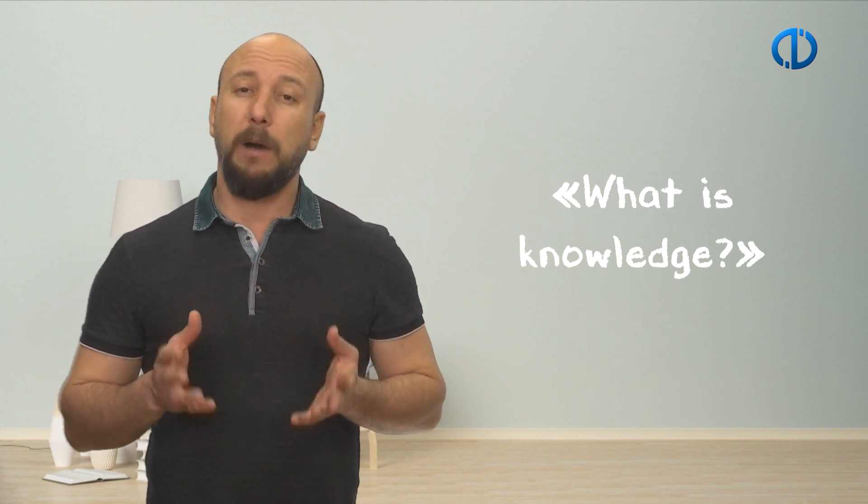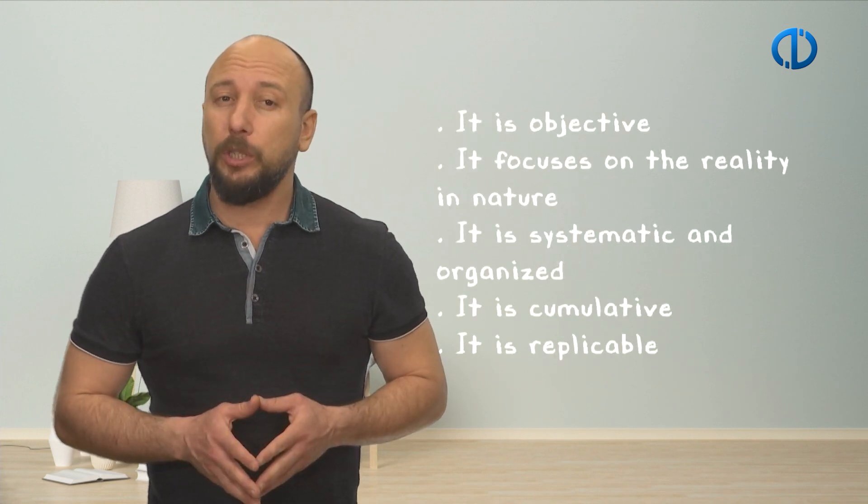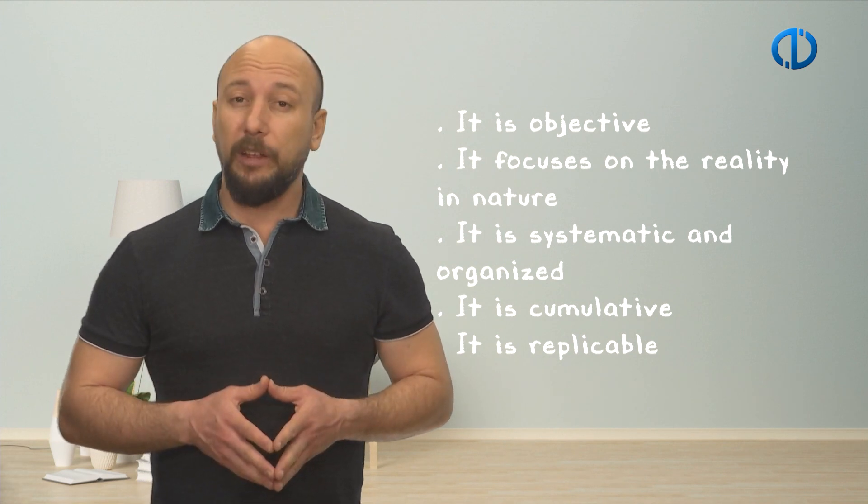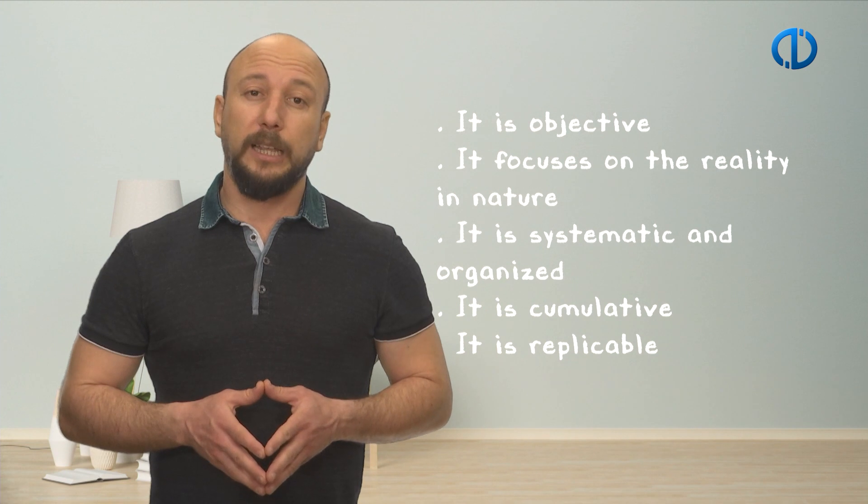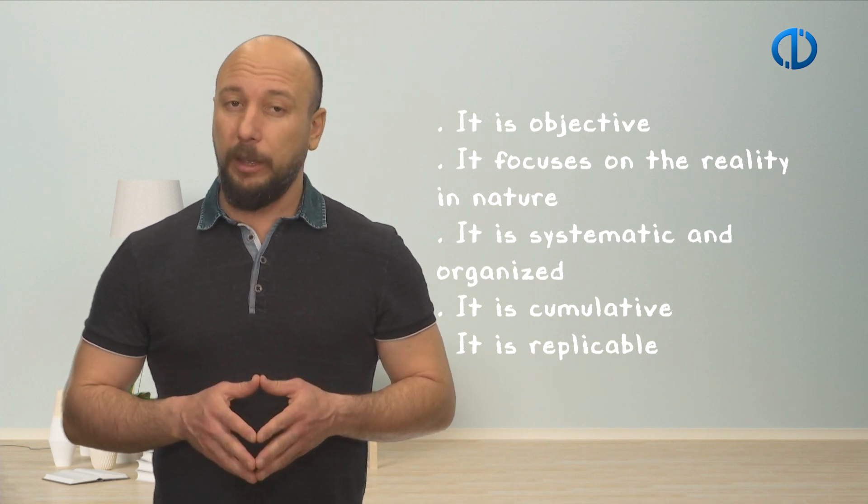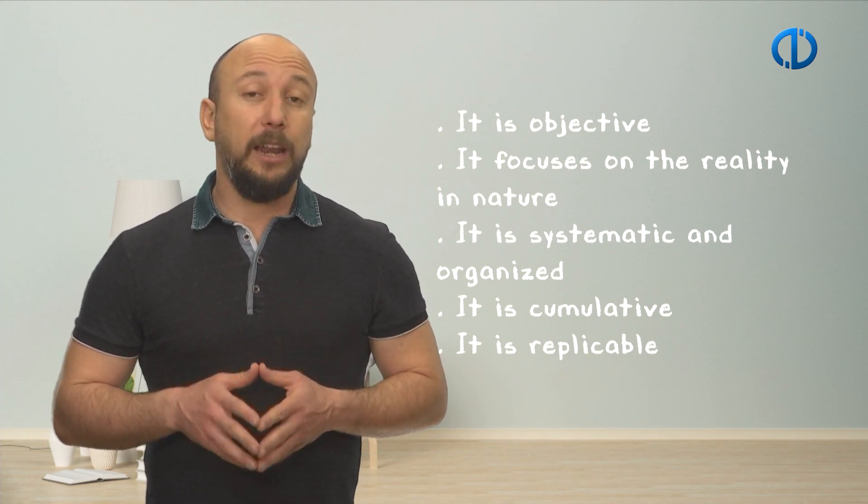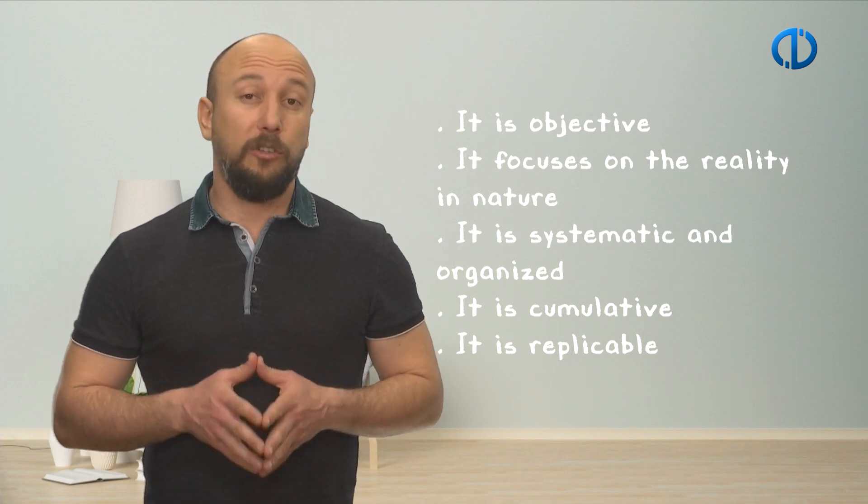Philosophy asks questions and strives to unfold the answers by reasoning but not by way of senses. On the contrary, science pursues its quest to find answers by using senses and the scientific methods. Some of the fundamental characteristics of science are as follows. It is objective. It focuses on the reality in nature. It is systematic and organized. It is cumulative. And it is replicable.